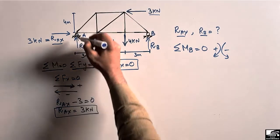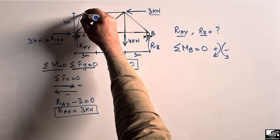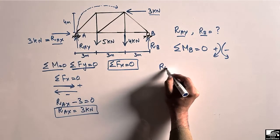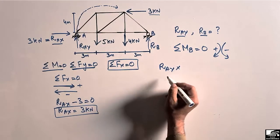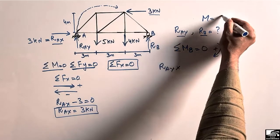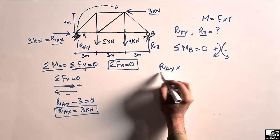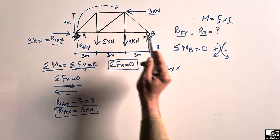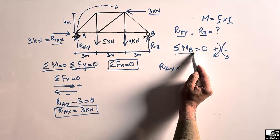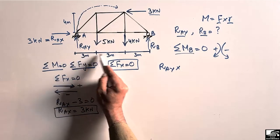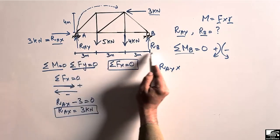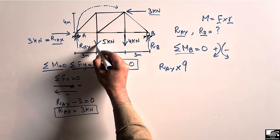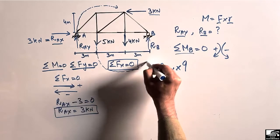R_AY acts upward and creates a clockwise moment about point B, so it is positive: R_AY multiplied by its moment arm, which is 3 + 3 + 3 = 9 meters. The 5 kN load creates an anti-clockwise moment about B, so it is negative: minus 5 multiplied by its moment arm of 6 meters.